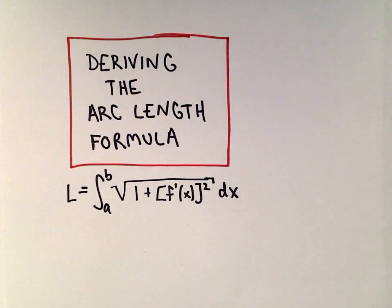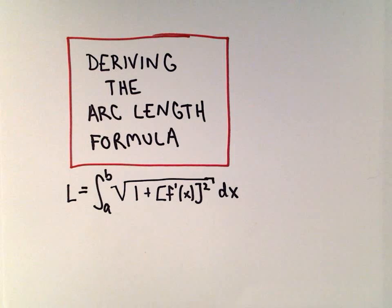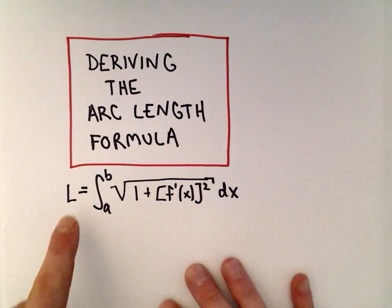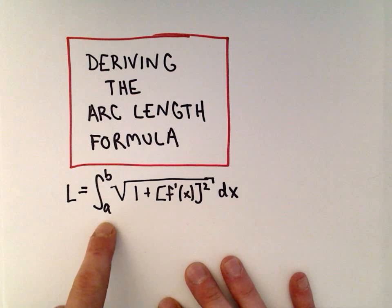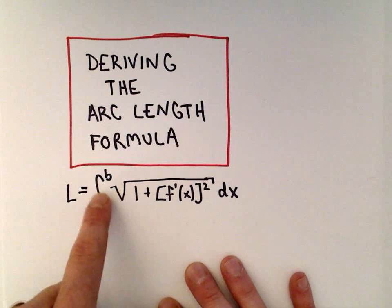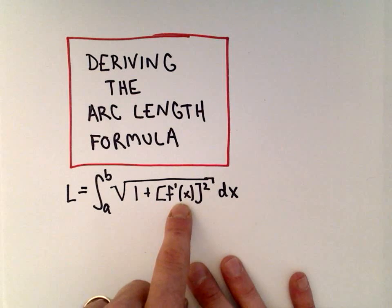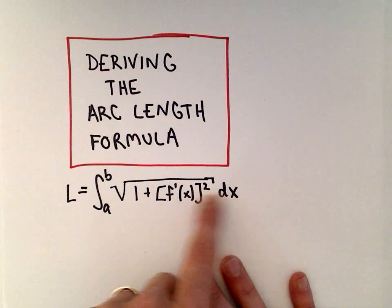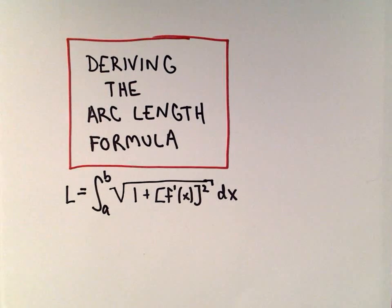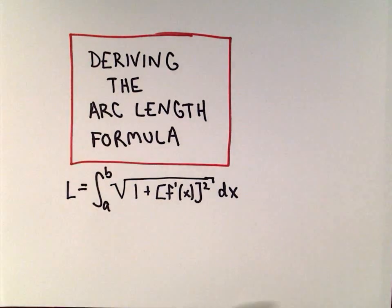In this video, I want to talk about deriving the arc length formula that you see in calculus. You may have run across this formula that the length is the definite integral from a to b of the square root of the quantity 1 plus f prime of x squared dx. This is if you're talking about a function of x. So let's talk about deriving it.